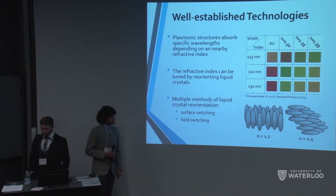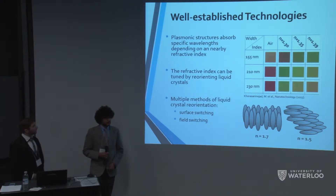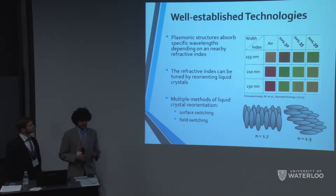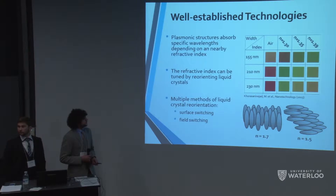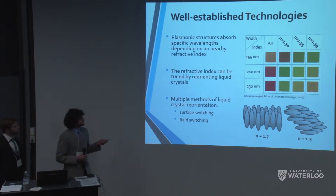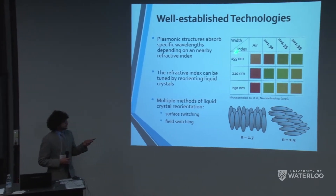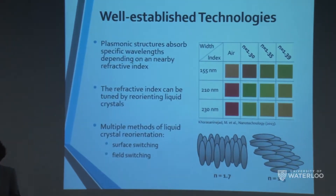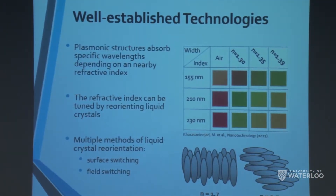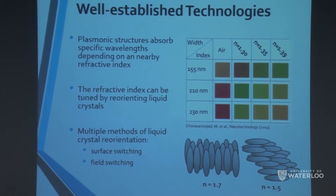It's already been shown in the literature that plasmonic structures of the order of the visible wavelength can absorb light at very specific frequencies. This absorption is very dependent on the refractive index of the surrounding medium. As shown in this diagram, different dimensions of these plasmonic structures at different refractive indices give different reflected colors. The key point is that changing the refractive index in this structure is translated into changing color.